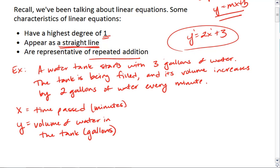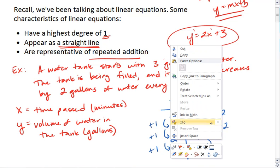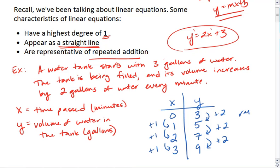We can set up a table. We know that when no time has passed we start with 3 gallons. After 1 minute we've added 2 gallons to get up to 5 gallons total. After another minute we're up to 7. After another minute we're up to 9. So every time our x increases by 1 minute we see that we've added 2 more gallons. This is where the idea of repeated addition comes from.